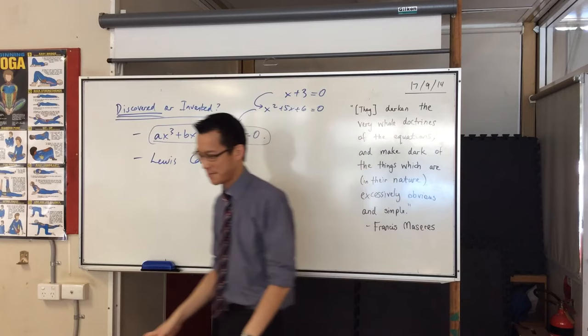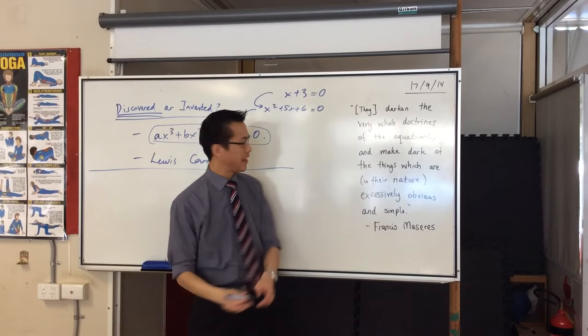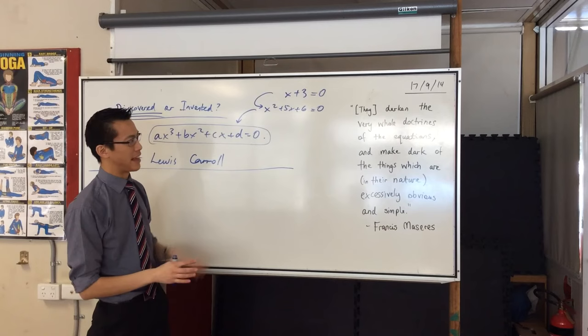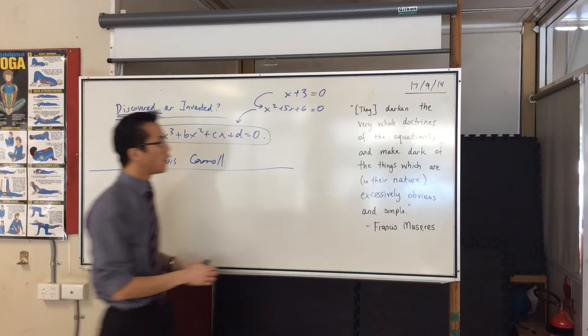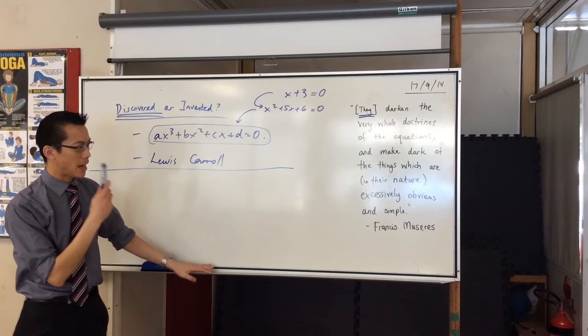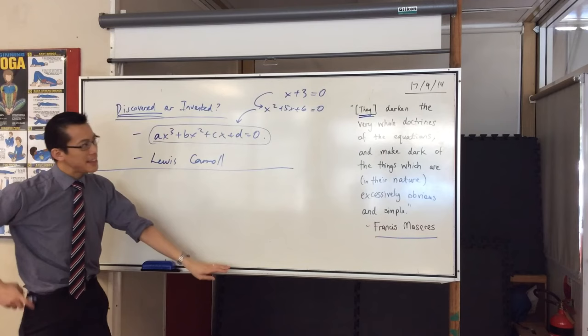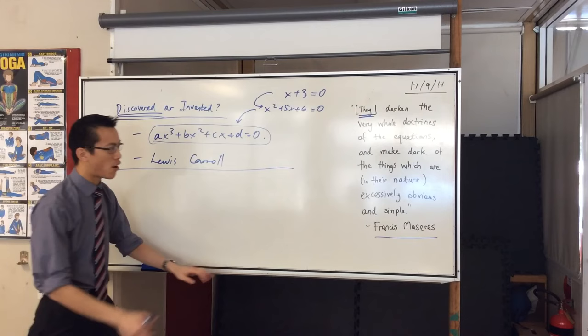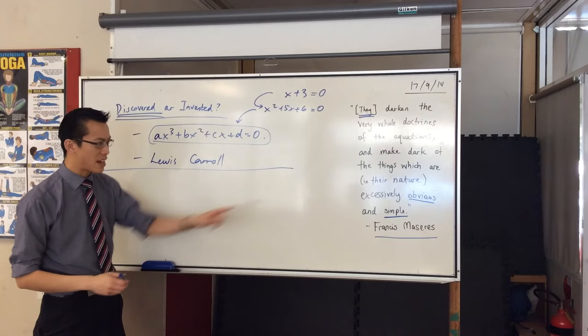So, you can rule that off. Now, here's this quote, which refers to something that we're going to cover today, which is on your handouts. Don't quite turn them over yet. I'm going to read it to you just so you can wrap your head around it because it's a very old quote. So the language is a bit hard. And I want you to try and think as we go through this, what do you think this is referring to? What's the they that is the subject of this sentence? So it says, this guy, Francis M, because I don't know how to pronounce his surname. He said, they, whatever they are, they darken the very whole doctrines of the equations and make dark of the things which are in their nature excessively obvious and simple. So, this guy, Francis, versus this idea, what does he think of this idea? Does he like it or does he dislike it?